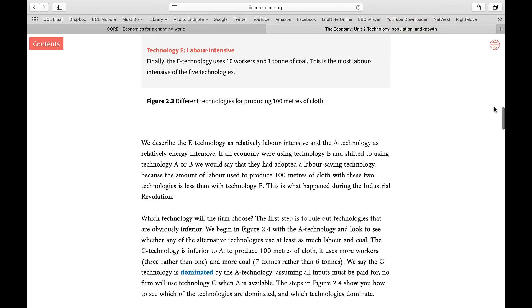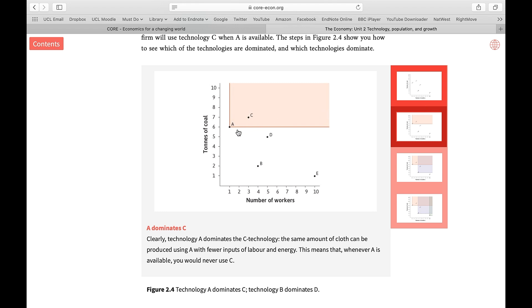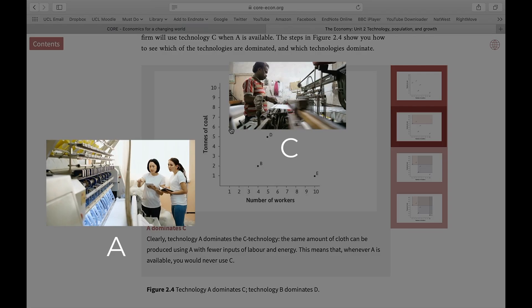Now the question is that which of these technologies is superior than the others. And for that, we need to scroll down and have a deeper look. If we do that, we realize that Technology A dominates Technology C. Why? Because Technology A produces the same amount of output as Technology C, but with a lesser number of people and lower amount of coal. In other words, Technology A is the more advanced or more updated version of Technology C.